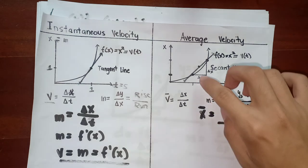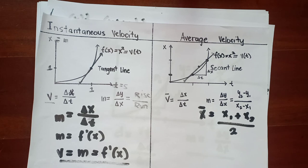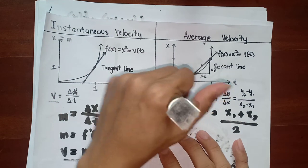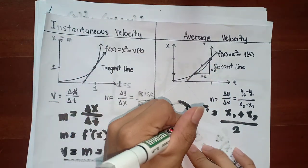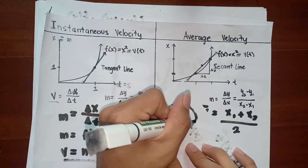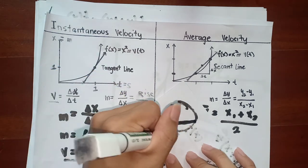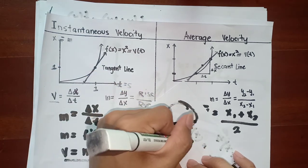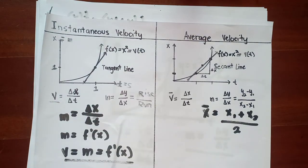The secant line can also be called a chord. Recall that within a circle, you call it a chord when it touches the circle. For example, if you have a circle with a point here and a point there, and you connect this, you have a chord. That's what it's called, a chord.